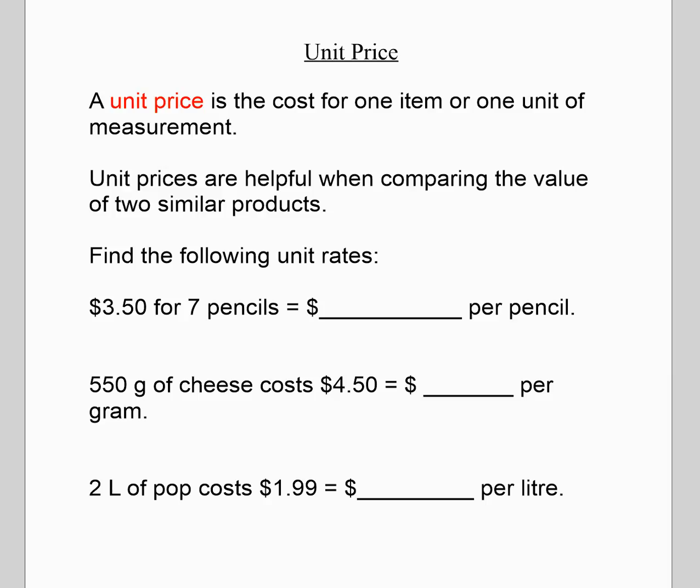Unit price is kind of the same as unit rate, but we involve money. This is used all the time in grocery stores. Next time you're at a grocery store, look on the shelf and what it does is it breaks down the cost of an item into a unit price. It's really helpful when you're comparing which product is the best value. Often the larger size is going to have a smaller unit price. Not always, but often. Often the no-name brand will have a smaller unit price than the regular brand. Have a look at those unit prices next time you're grocery shopping.